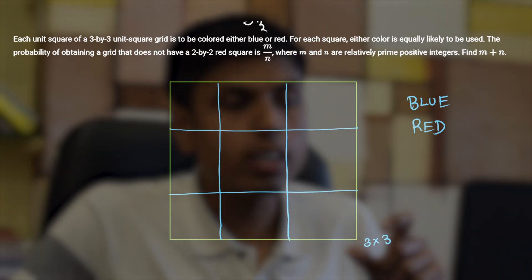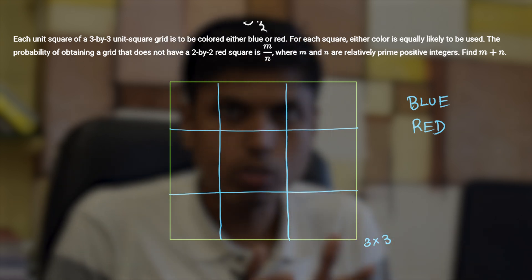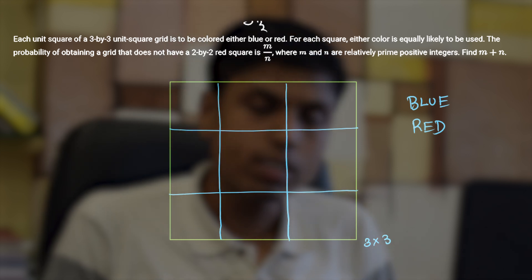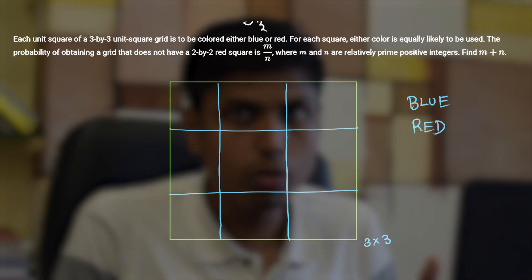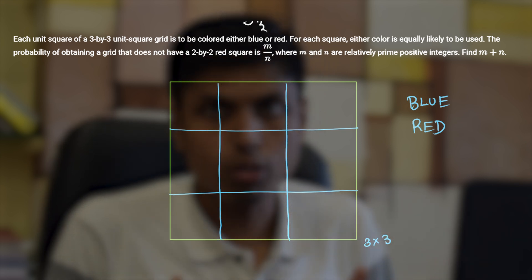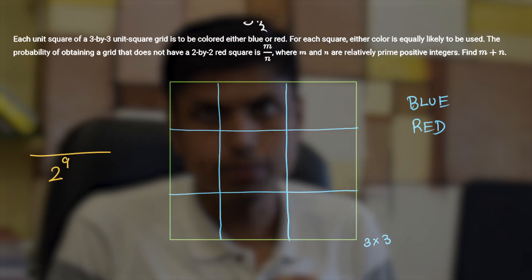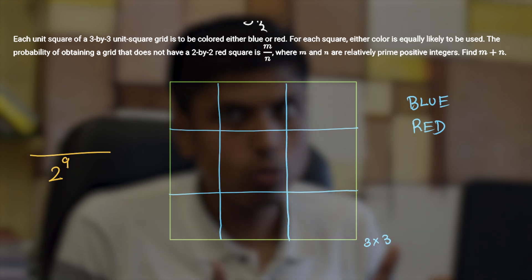It's also given that either color is equally likely, which means that each coloring configuration of these nine unit squares is equally likely, and thus we can apply the classical definition of probability which is number of favorable outcomes by total number of outcomes. Clearly the total number of outcomes are 2 to the power 9 in number because 2 for each unit square and there are 9 in total and they are also independent, so 2 to the power 9.